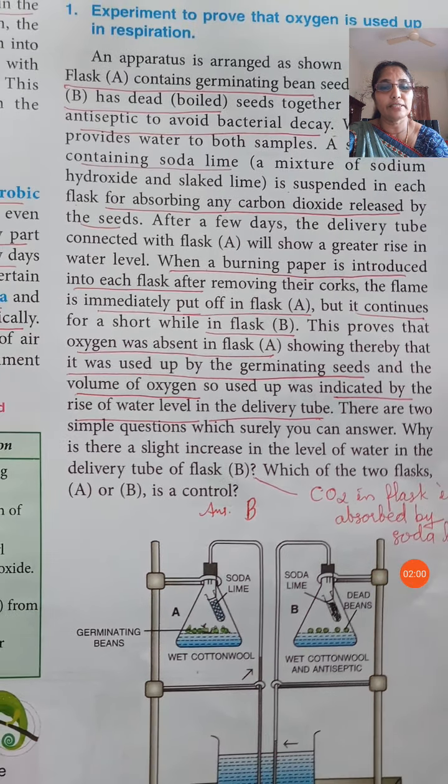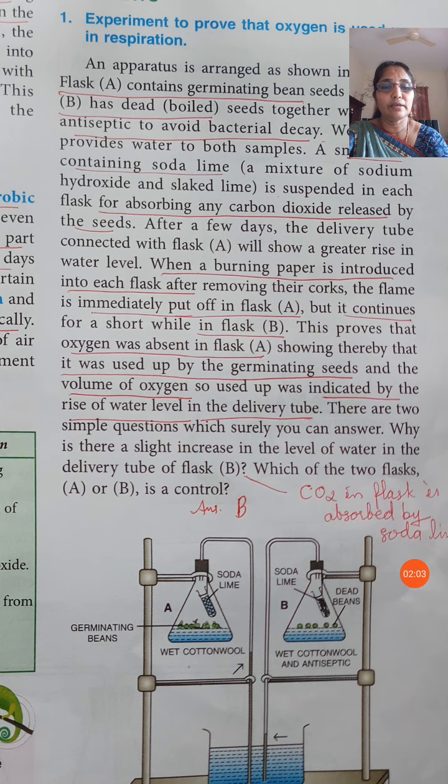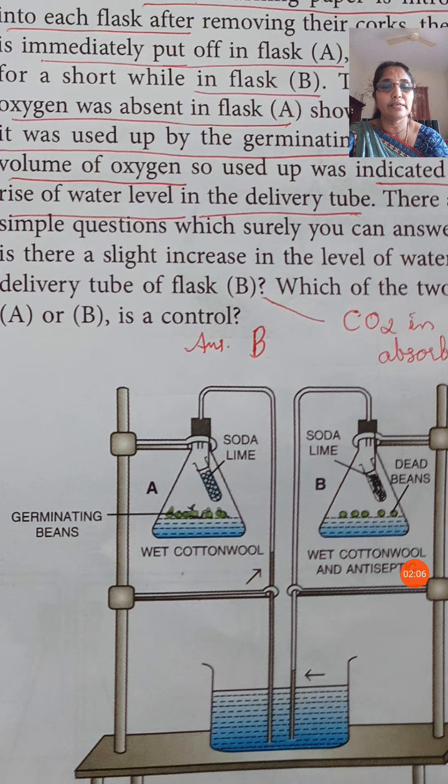After 2 or 3 days, we can see that there is a considerable rise in the tube that is connected with flask A. The colored water from the beaker rises up to a level. We can see the rise of water in the delivery tube.